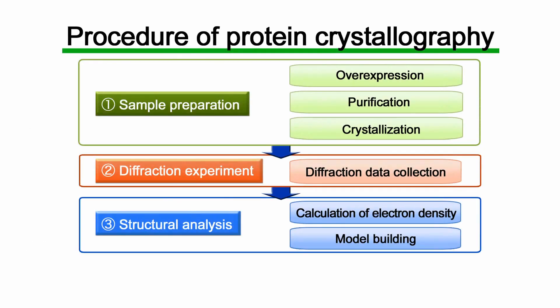In protein crystallography, the structure of proteins is determined by three main steps: preparation of crystals, diffraction experiment, and structural analysis.